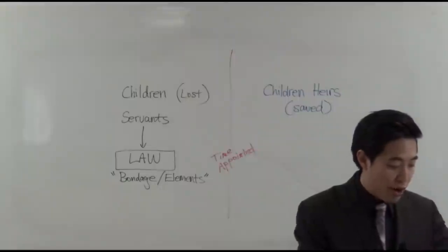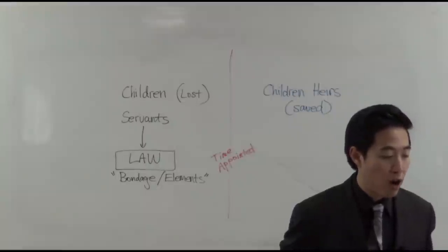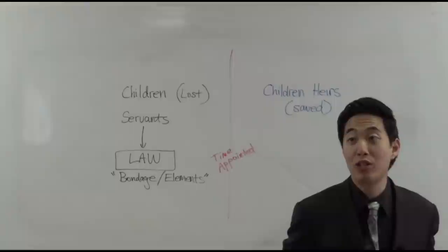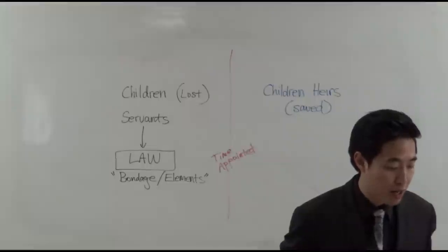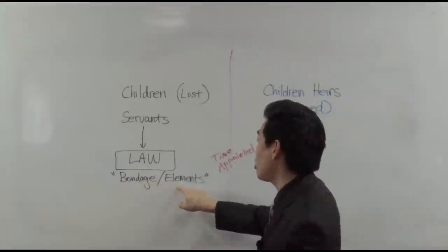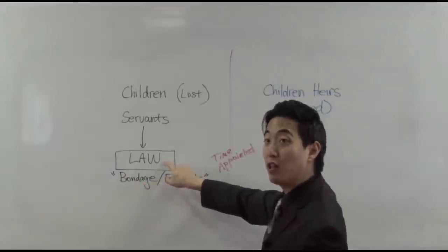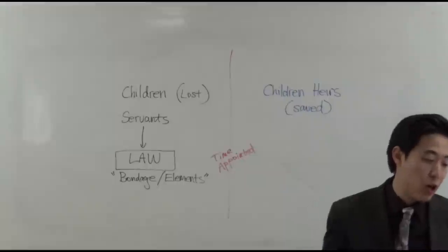But let's make it simpler here. I want you to skip down to verse 24. Which things are an allegory, for these are the two covenants. The one from the Mount Sinai. Isn't that where the Ten Commandments, the law of Moses, came from? Yeah. Mount Sinai, which gendereth to bondage. See that? Obviously, Paul is talking about right here, bondage under the elements. He's referring to the context of the law. There's no doubt about that.